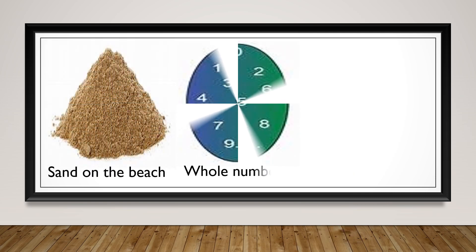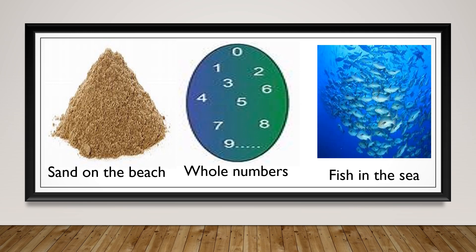Now let's move on to infinite sets. An infinite set goes on and on without an end — it doesn't end. It just continues going and going forever. One example of an infinite set is the set of natural numbers: zero, one, two, three, four, five, six, and so on. It continues and never stops.